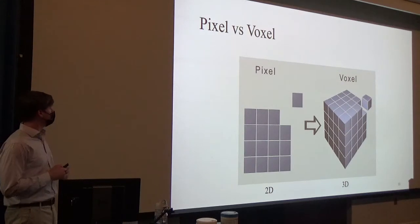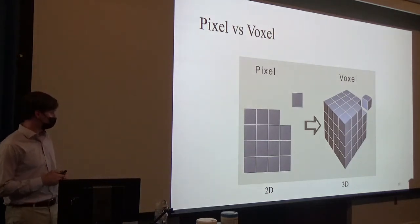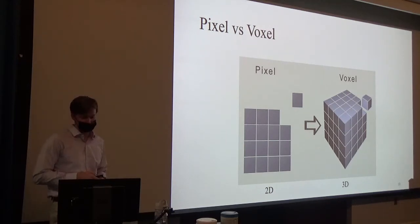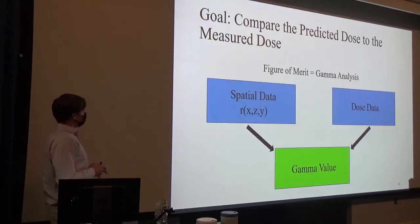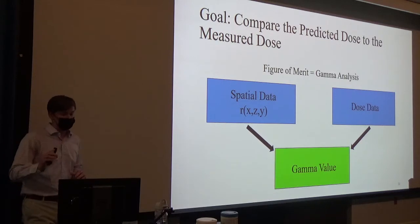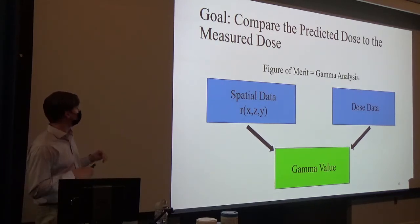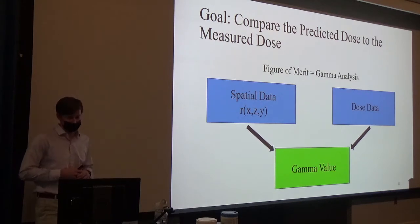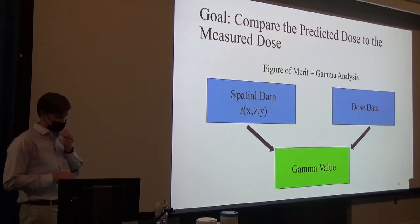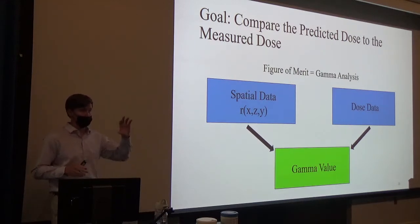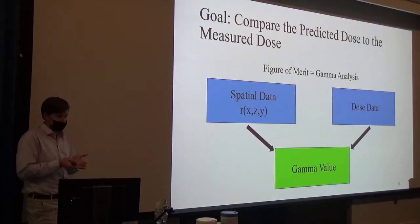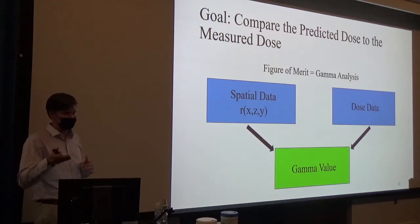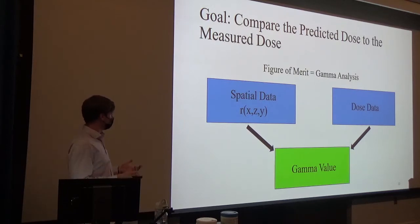Before we go on, it's important to make the distinction between a pixel and a voxel. A pixel is what you see on your television screen — it's two-dimensional. A voxel is the same concept but forms a volume in three dimensions. Our goal is to compare the predicted dose from the treatment planning system to the measured dose scanned in the dosimeter. Both of these datasets have two types of data: spatial data — where you are within the dosimeter — and a dose value associated at that specific voxel. We have two different sets of data and need to combine them into one value for comparison. We do that using the gamma analysis figure of merit.